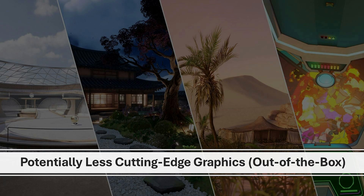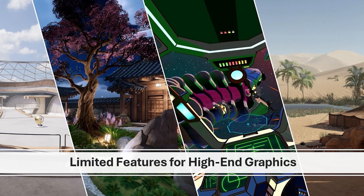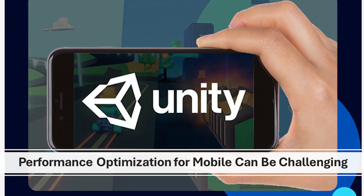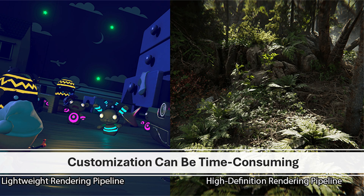Now let's take a look at the cons of Unity. While Unity can achieve impressive visuals, reaching the same level of raw graphical fidelity as Unreal Engine 5 might require more work and expertise in customizing the rendering pipeline and materials. Unity might have a slight disadvantage when it comes to pushing the absolute boundaries of graphical realism compared to Unreal Engine's latest features. Optimizing Unity games for mobile devices can also be more challenging compared to Unreal Engine, which offers built-in mobile optimization tools.